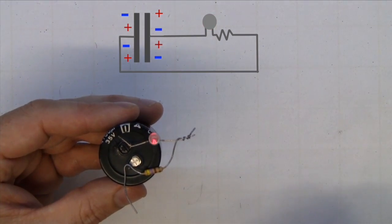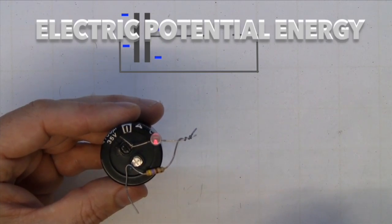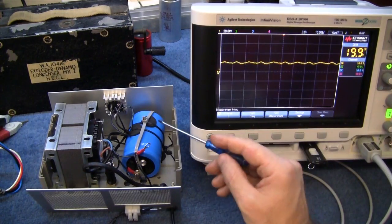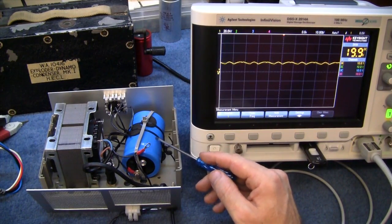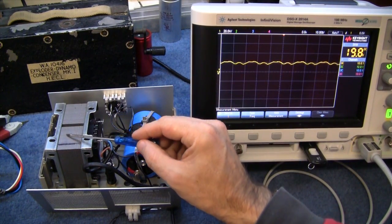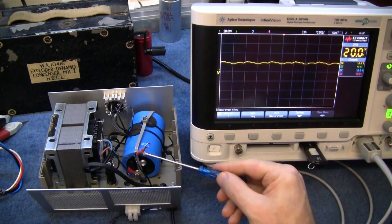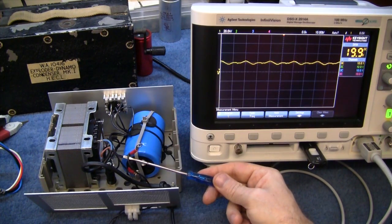The energy stored in the capacitor is known as electrical potential energy. Capacitors are very good for smoothing voltages as well. Here we have an AC transformer and a rectifier and I've disconnected the smoothing capacitor.